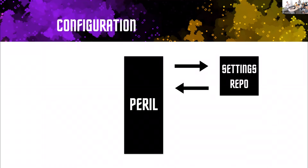Peril is like: you create one central server, and then all of the unique application code for the thing you want to do lives in a completely separate place. This abstraction allows you to not just build 50 different microservices for every single problem. Think about it as changelog checks, spell checking, assignee checks — most companies would make a separate server for every single one. Peril says no — all of your unique code should live in your own repo, controlled entirely by you. Peril's job is specifically to evaluate and run it for you.